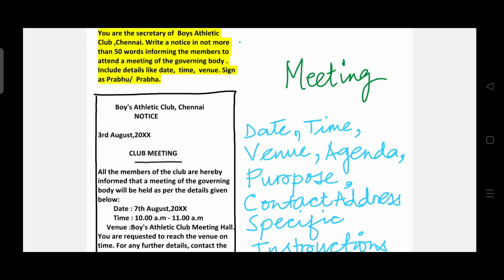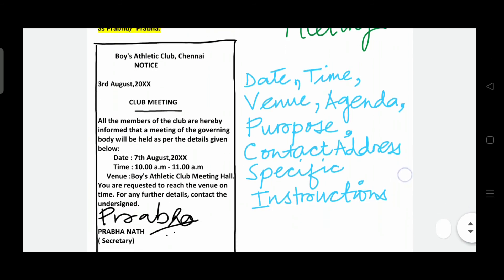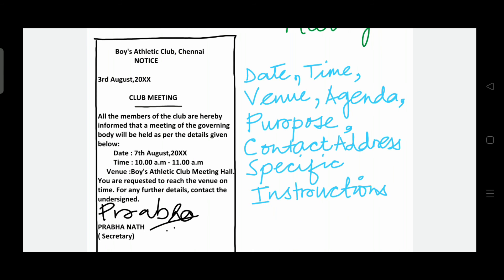The next one is a meeting notice. You are the secretary of Boys Athletic Club, Chennai. Write a notice in not more than 50 words informing the members to attend a meeting of the governing body. The heading is 'Club Meeting', then give specific instructions. In the body: All the members of the club are hereby informed that a meeting of the governing body will be held as per the details given below. Date, time, and venue must be mentioned clearly. You are requested to reach the venue on time. For any further details, contact the undersigned. Sign as Prabhanath, Secretary — don't write your own name, use the name given in the question.